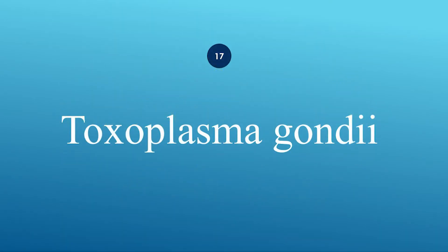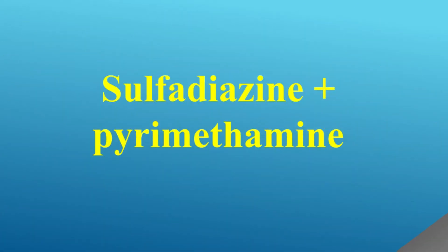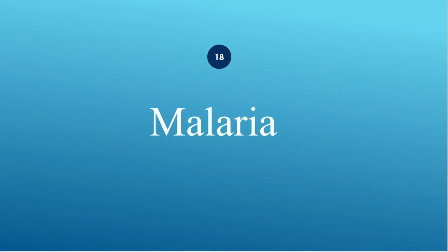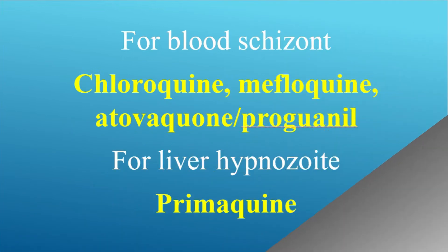How do you treat Toxoplasma gondii? Use sulfadiazine plus pyrimethamine. What are the treatments of malaria? For blood schizonts, use chloroquine, mefloquine,